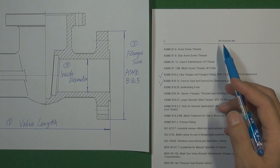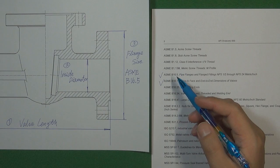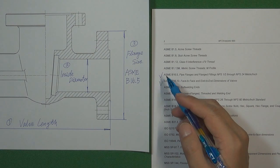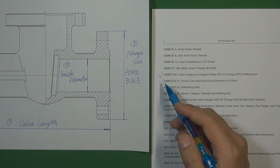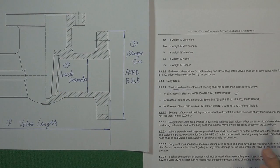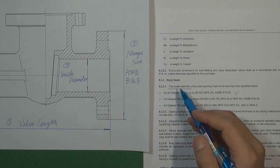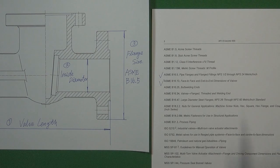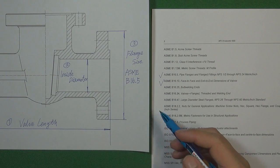When you use API-600 to design a gate valve body, those three basic valve body sizes are determined by three separate valve standards. The flange size is determined by ASME B16.5. The valve length is determined by ASME B16.10. And the valve body inside diameter is determined by ASME B16.34.